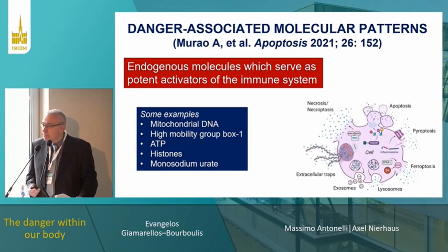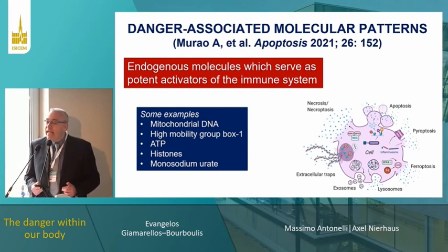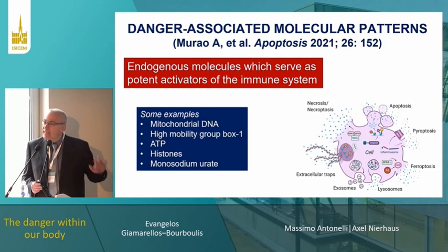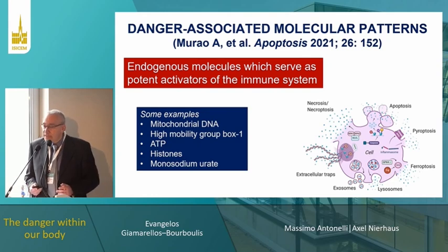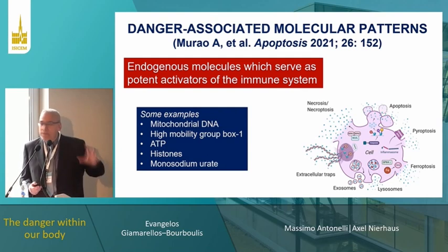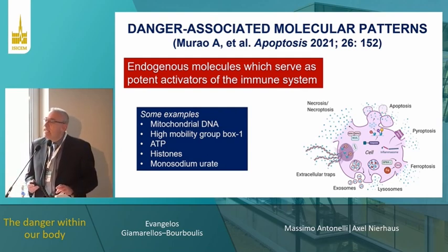How are these substances released? A cell may die abruptly due to necrosis or through apoptosis. When a cell is destroyed through necrosis, it releases all intracellular constituents. Also important: extracellular traps — when a neutrophil opens and releases extracellular traps, these NETs are actually a type of danger-associated molecular pattern.